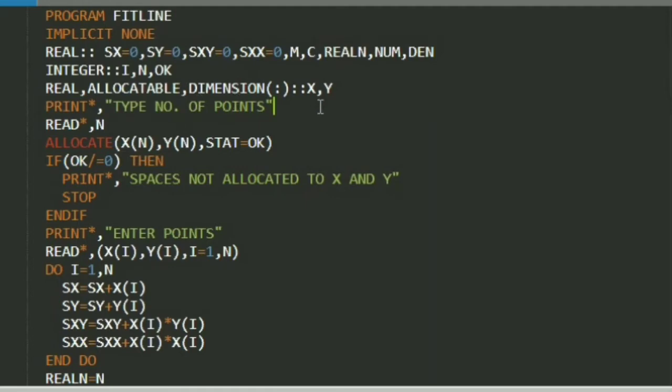Then s is for summation. This way i, n, ok are integer type variables. अप चाहें तो अपनी मर्जी से variable को कोई भी नाम दे सकते हैं.